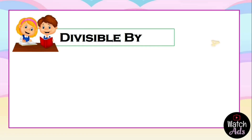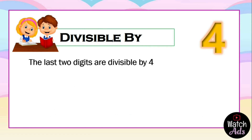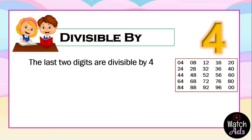Divisibility by 4: the last two digits are divisible by 4. On the right side, we have a side note of the multiples of 4. First, let's have an example. We have 2,877. Remember the condition — the last two digits should be divisible by 4.